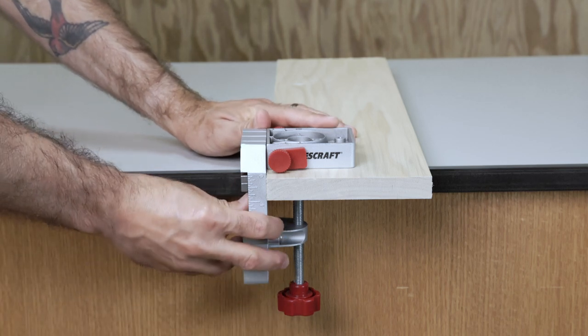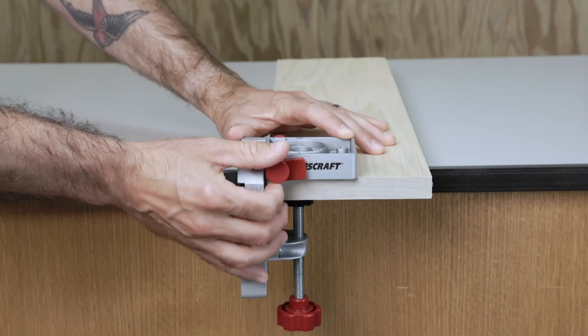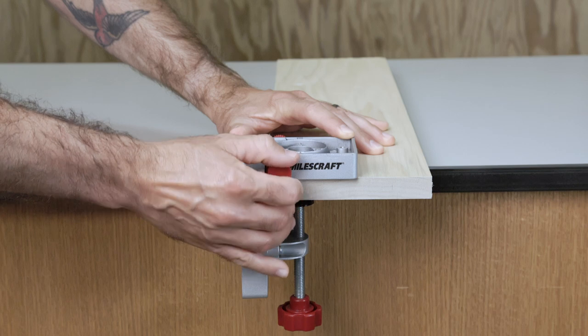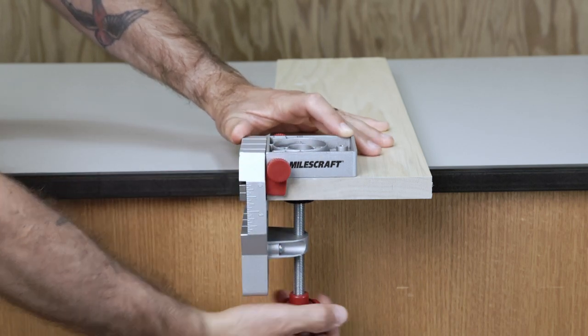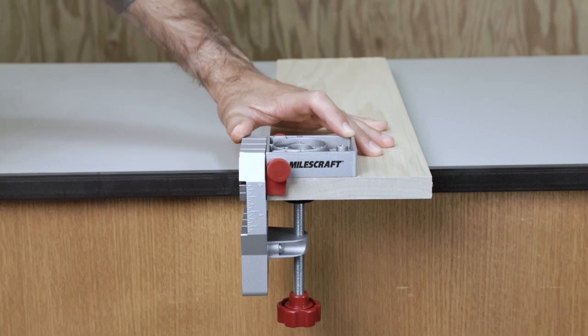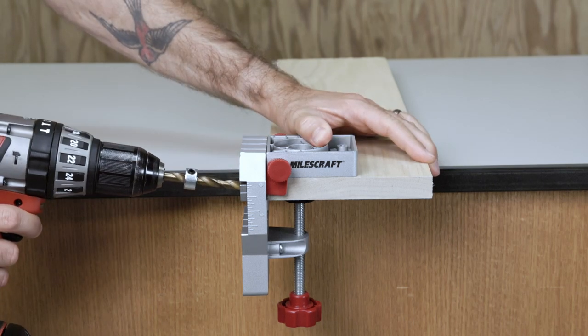To help eliminate alignment issues, the Joint Master has built-in edge stops. Simply lower, tighten, and rest your boards against them to ensure both boards have their dowel holes in the same position for a solid joint.